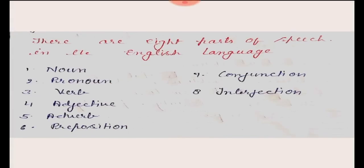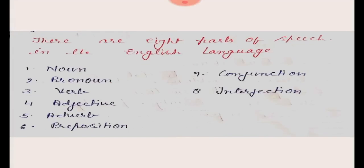There are 8 parts of speech in the English language: noun, pronoun, verb, adjective, adverb, preposition, conjunction, and interjection.